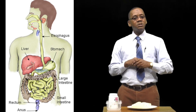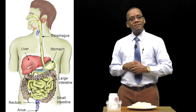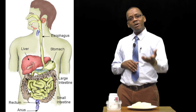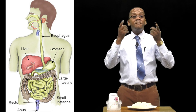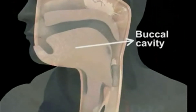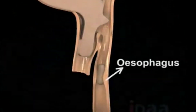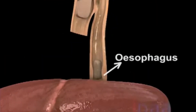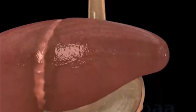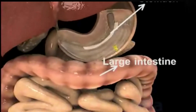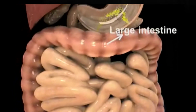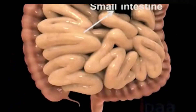Can you identify the parts which the food passes? The food then passes through the tube called esophagus, then goes to the stomach, small intestine, then large intestine, and to the rectum.